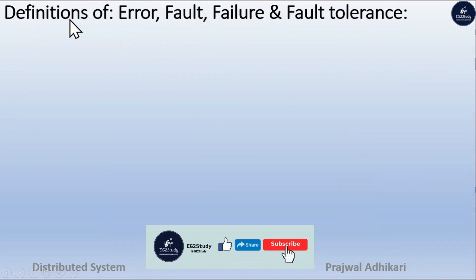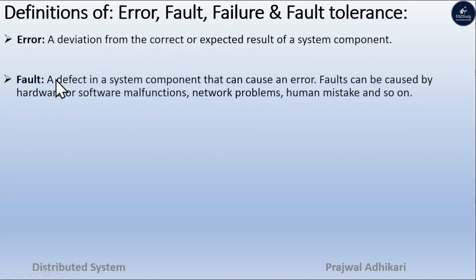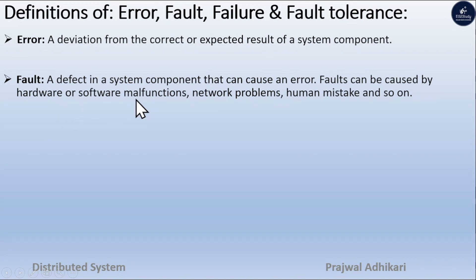Now, the definitions: What is an error? A deviation from the correct or expected result of a system component. What is a fault? A defect in a system component that can cause an error. A fault can be caused by any hardware, software, network problem, human mistake, and so on.